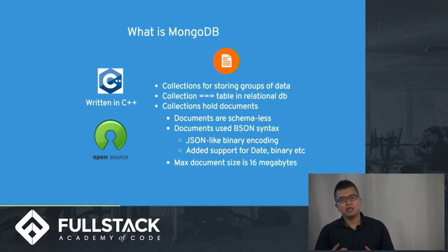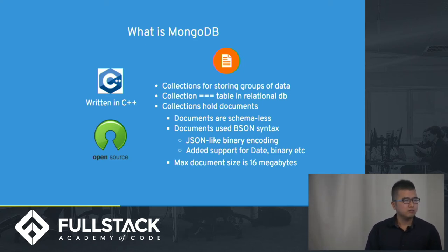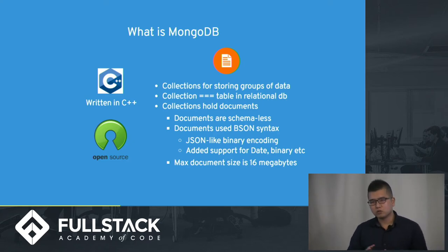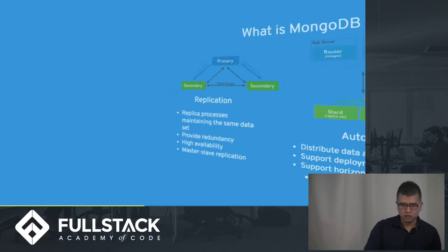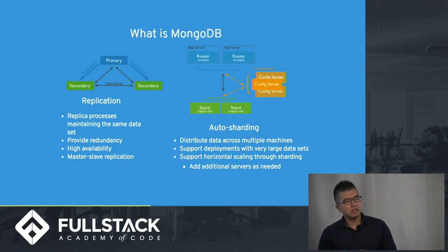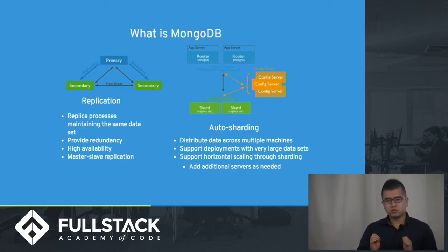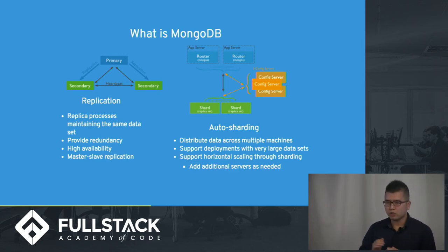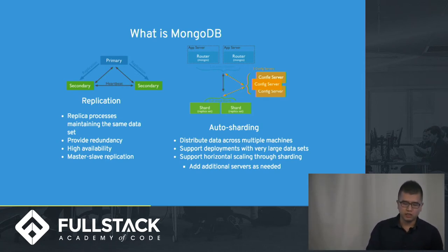BSON allows JSON to host more data types, for example dates and binary. Each document can only hold 16 megabytes, so there's a limit per document, but you can surpass that limit by breaking a bigger document into smaller documents. In terms of core concepts, one is replication — in order to ensure that your data is available to clients, you replicate your data to multiple servers, so if one server goes down, another server can take over to handle requests from clients.